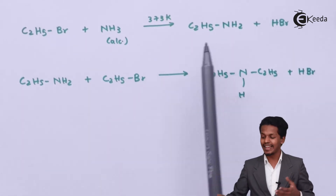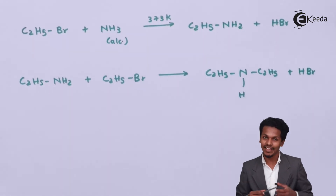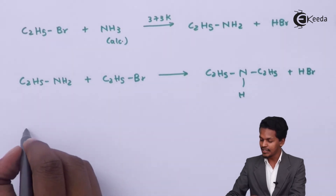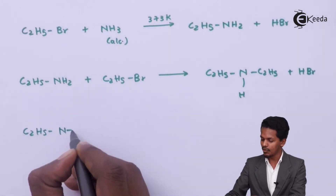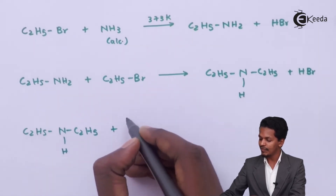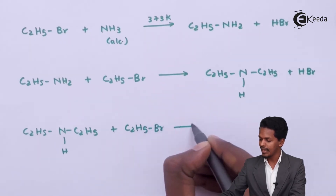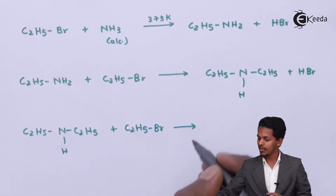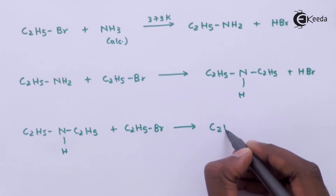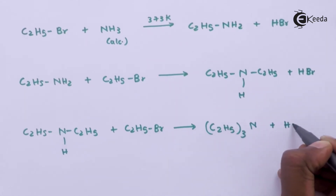Initially we got ethylamine, but now what we have got is diethylamine. The reaction doesn't stop here. The diethylamine will again react with the remaining C2H5Br to give a tertiary amine, that is triethylamine, (C2H5)3N.